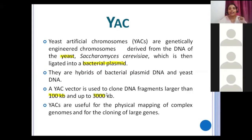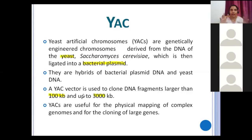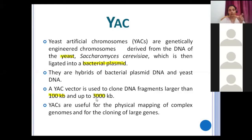In BAC you can insert a maximum of up to 300 kb, but in YAC you can insert larger fragments starting from 100 kb to 3000 kilobases. So the first difference: one is from bacteria E. coli, the other is a hybrid between yeast and bacterial plasmid. Second difference is size — BAC up to 300 kb, YAC from 100 to 3000 kb. YACs are useful for physical mapping of complex genomes and for the cloning of large genes.